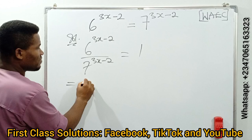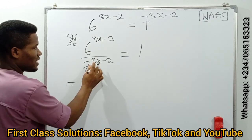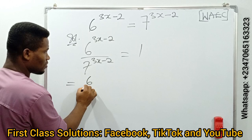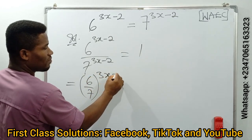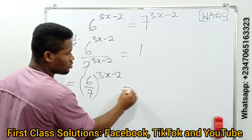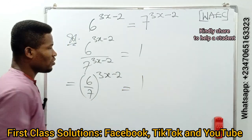Looking at this, since they have the same power, we can write it as (6/7)^(3x-2) = 1. Hope you get to the point.